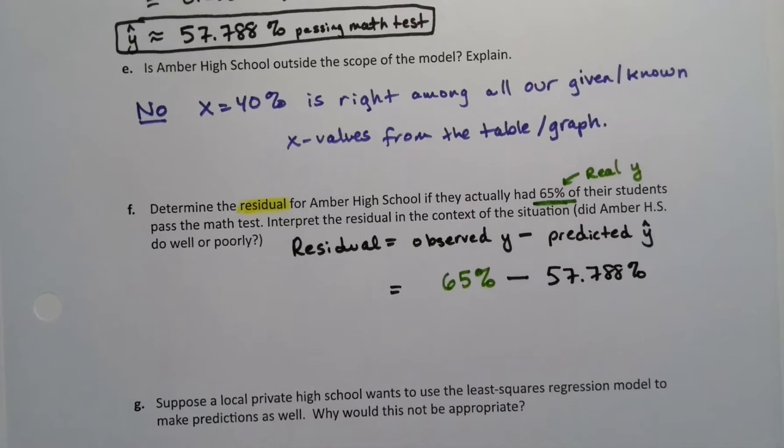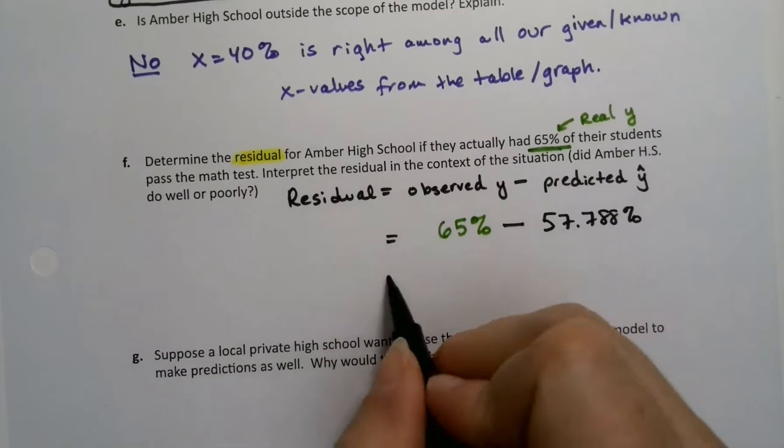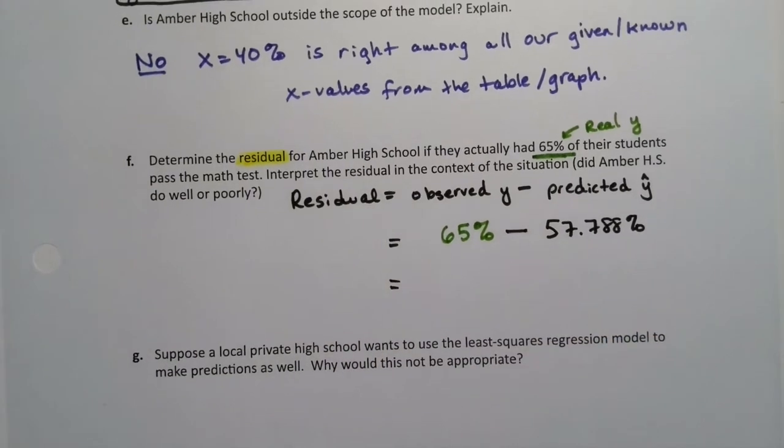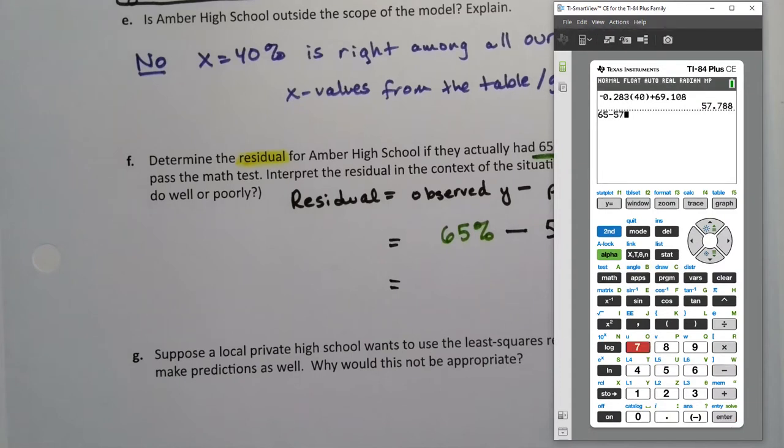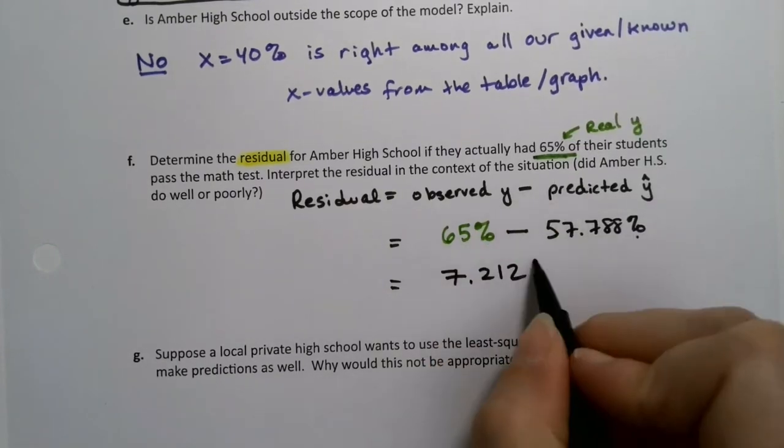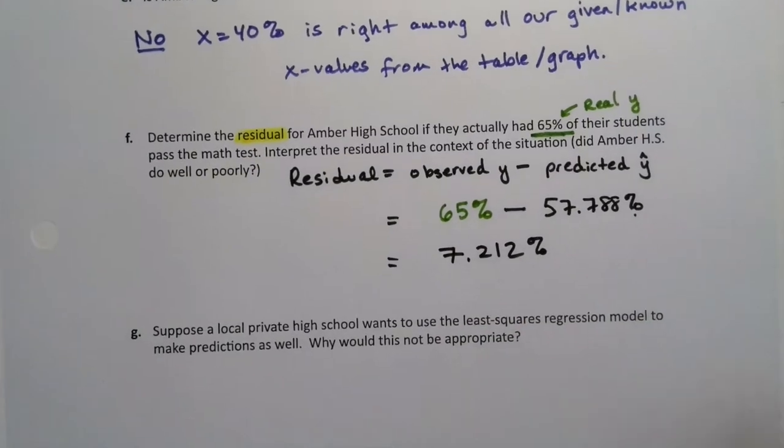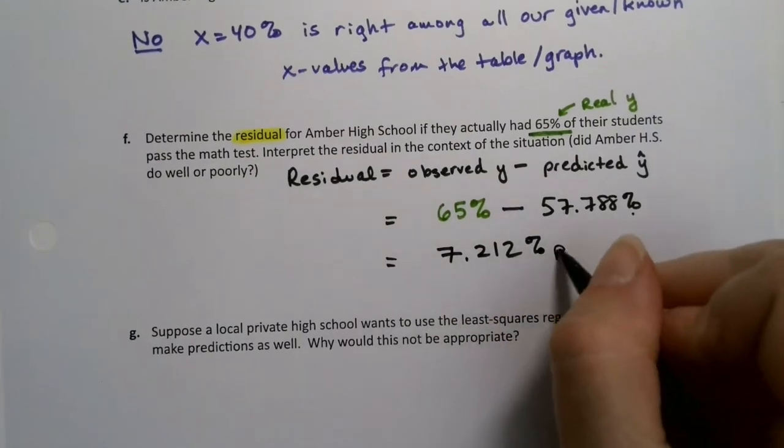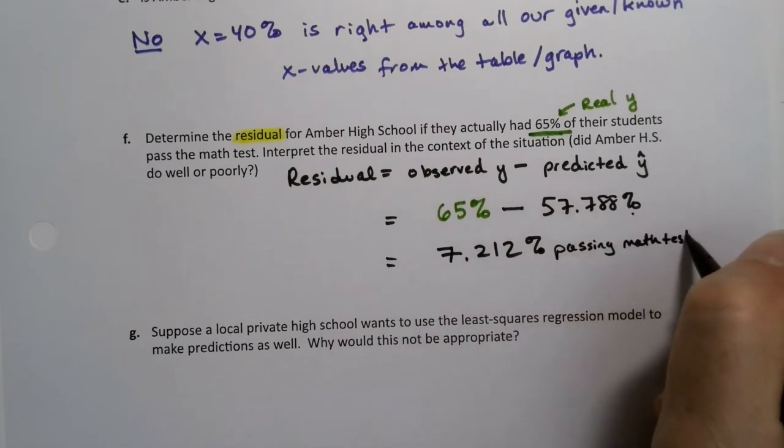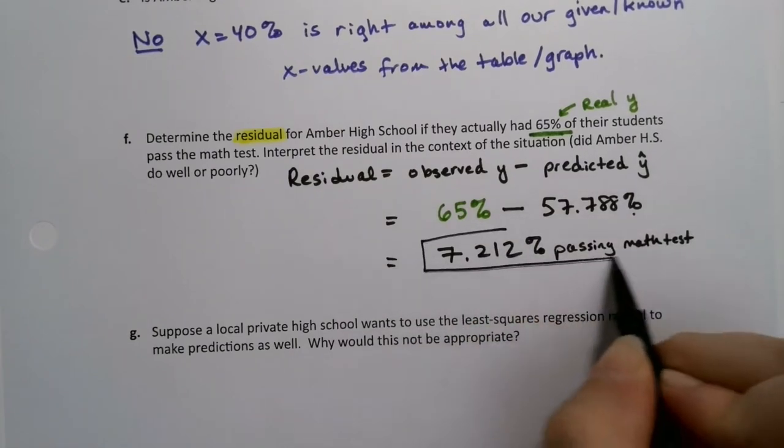All right, so what would that be? 65 take away 57.788. And we get 7.212. And its unit would be percent, right? Technically it's percent passing math because it's a y-value, right? It's that math test. That's the residual.